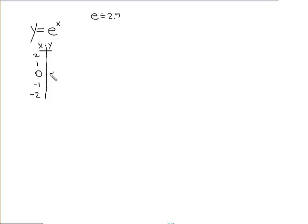When I plug in E to the 0, E to the 0 power is going to be equal to 1. When I plug in 1, I get E to the first power, which is E, which is about 2.7. When I plug in 2, I get E squared. To get this, we're going to want our calculator.